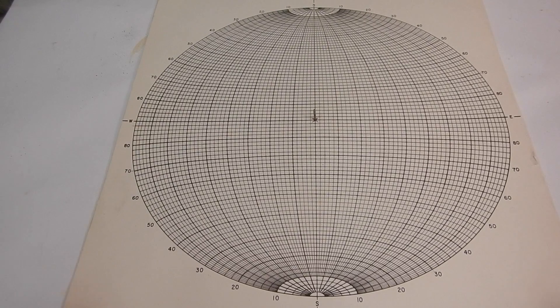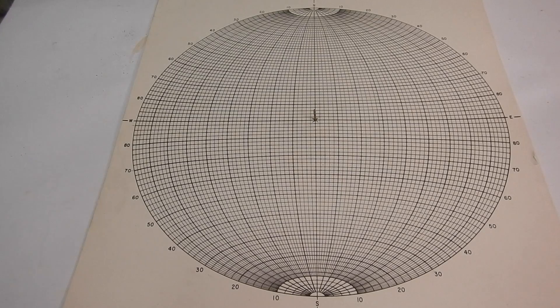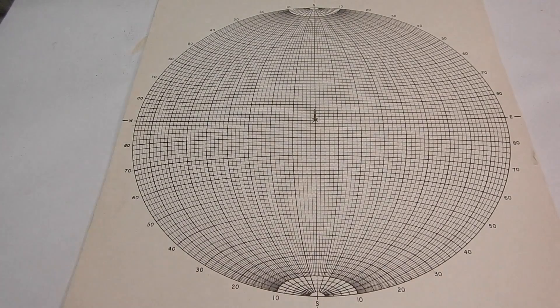All right guys, so we talked about planes and lines, what they look in 3D, what we saw in the field. Now we're going to move on to the stereonet and how we actually construct a stereonet and orient planes, lines in a stereonet.